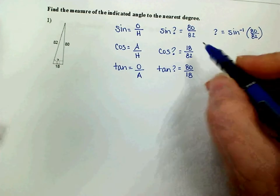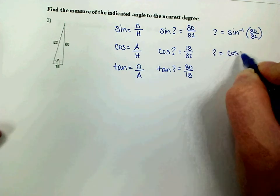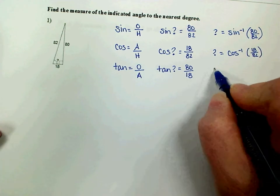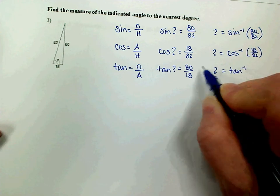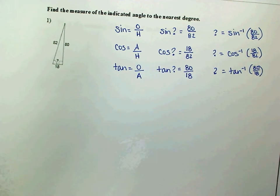If we're wanting to find our angle using cosine, then our angle is the inverse cosine of this ratio, 18 over 82. If we're using tangent, our angle will be the inverse tangent of 80 over 18. All of these should give us the same answer, though. You don't have to do all three of them. You just need one of them.